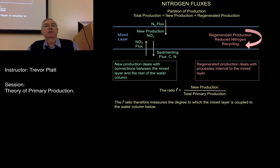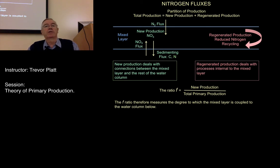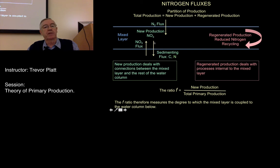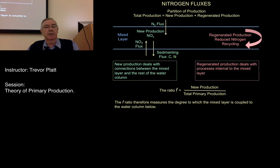It's possible to partition primary production into the component that depends on new nitrogen — called new production — and the component that depends on regenerated nitrogen — called regenerated production. The sum of them is total primary production. New production is considered synonymous with export production, and this is a component important for climate models.